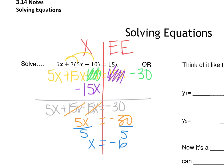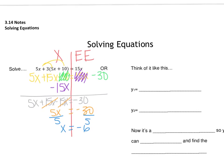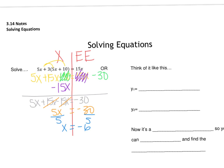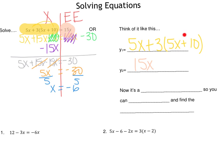Not a terrible problem. However, there is an easier way — we can actually use the calculator to help us. It requires us to think of this as two separate equations instead of one. The first equation, 5x plus 3 times the quantity 5x plus 10, is going to be y1. The second equation is what's on the right side of the equal sign, which is 15x — that's going to be y2. Now instead of one equation, we have two equations, which means we have a system, and we can graph it and find the intersection.